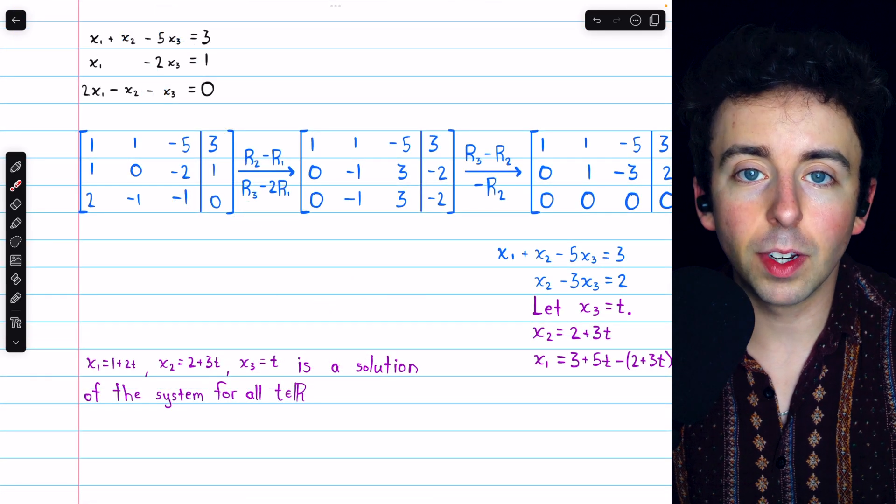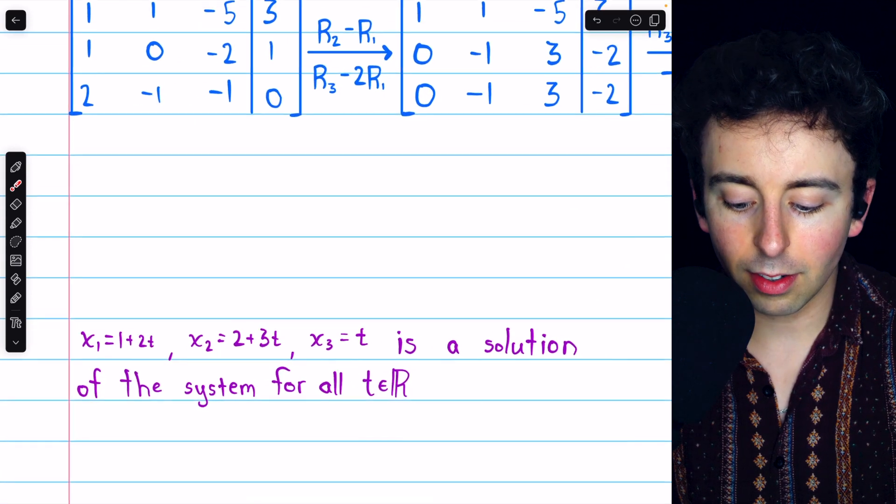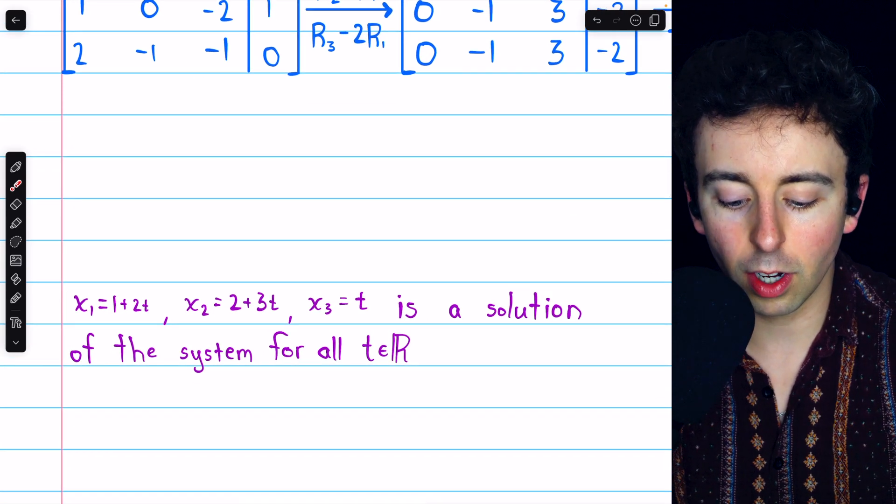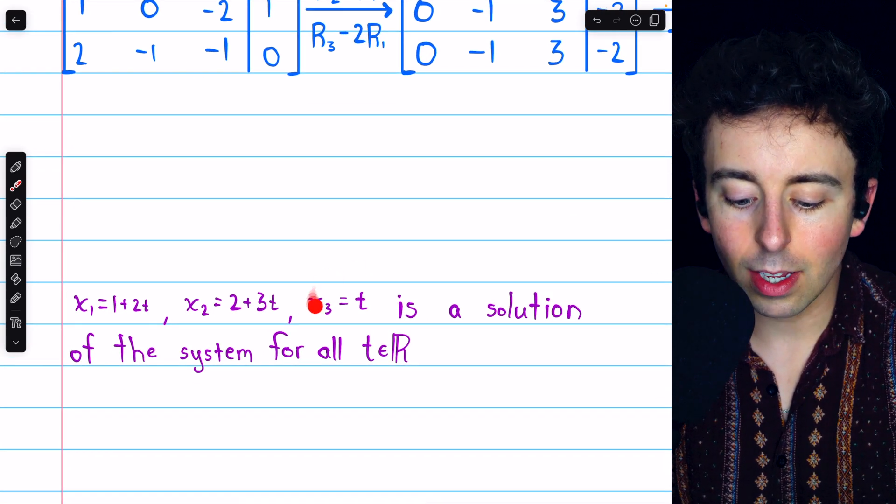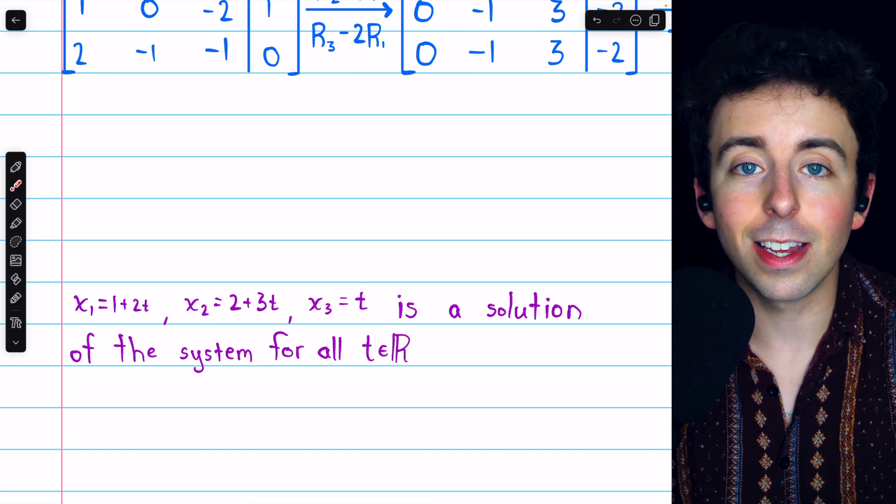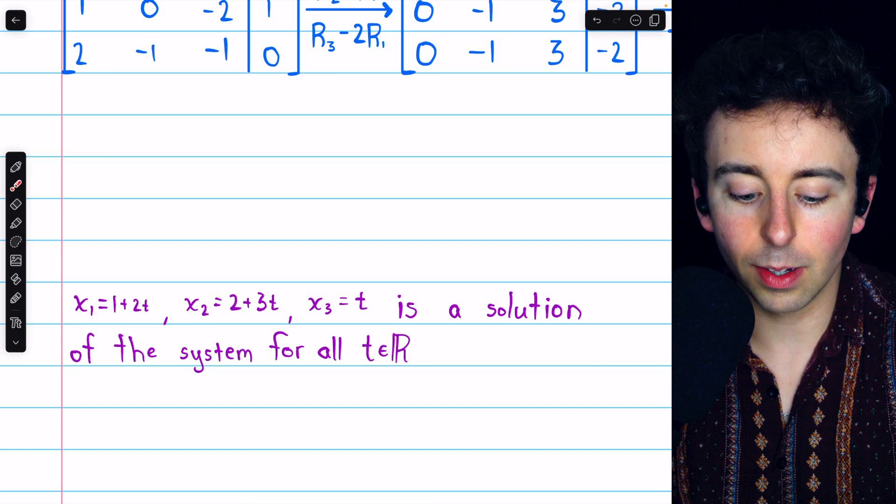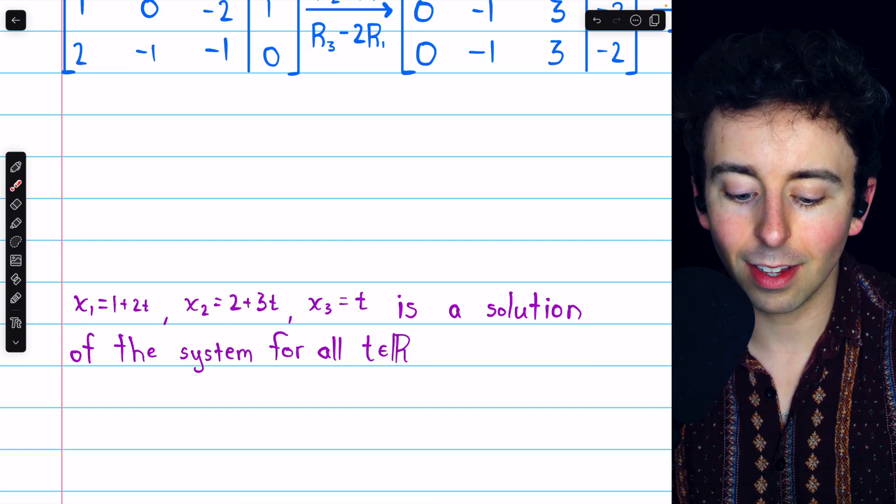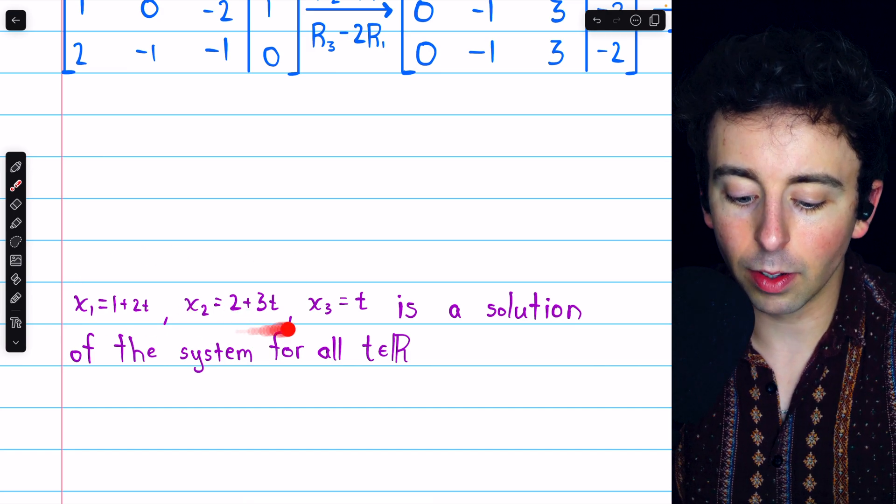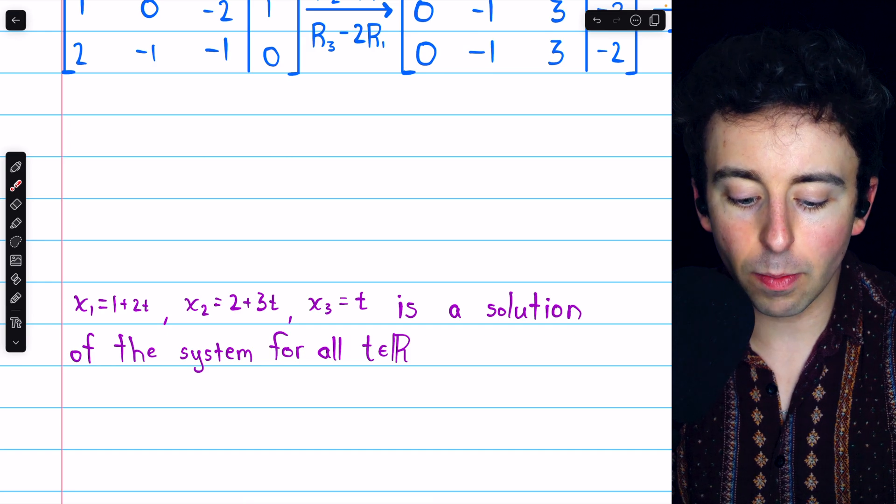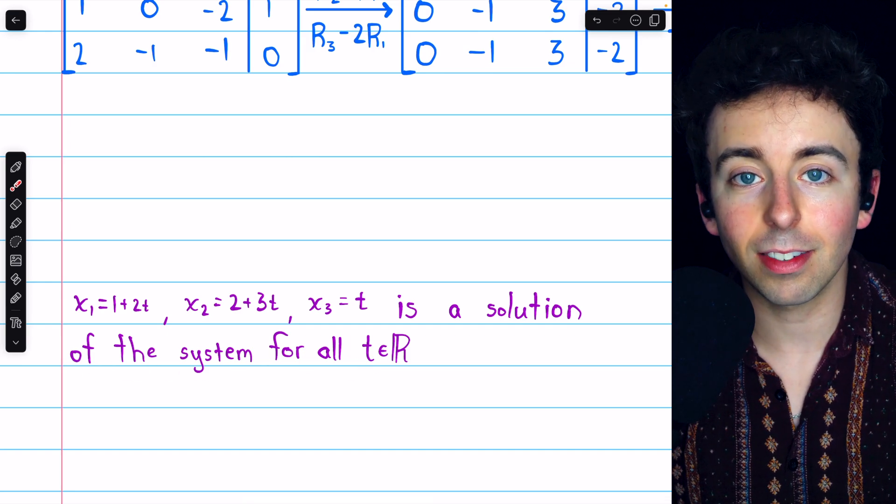And so, this system has infinitely many solutions. We've just solved it with back substitution. We found that x3 is free to be whatever value t that it likes. And from there, x1 is equal to 1 plus 2t, and x2 is equal to 2 plus 3t. Any triple of values like this is going to be a solution of the system.